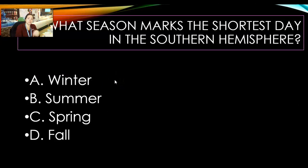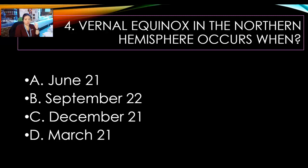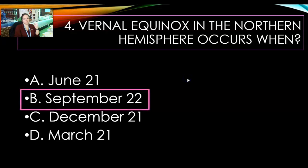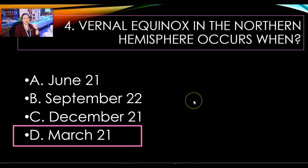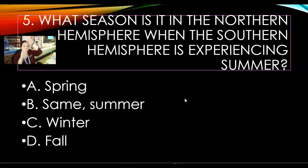What season marks the shortest day in the southern hemisphere? That is winter for the southern hemisphere. What season is the shortest day in the northern hemisphere? Again, it's winter. The vernal equinox in the northern hemisphere occurs on — June 21st, September 22nd, December 21st, or March 21st? The answer is March 21st. What season is it in the northern hemisphere when the southern hemisphere is experiencing summer? We have winter.